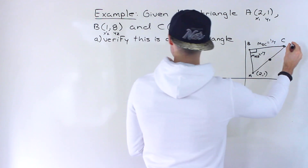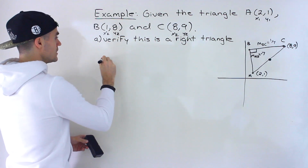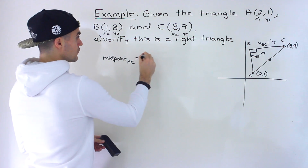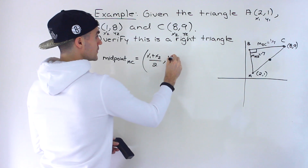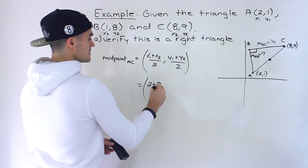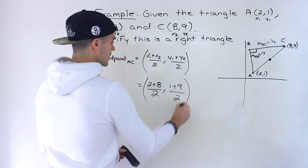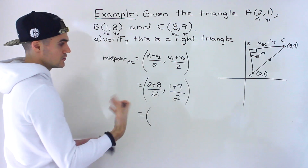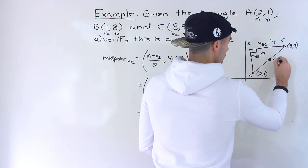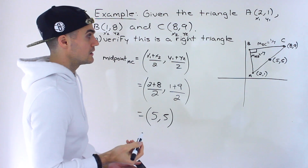For Part B, we need the midpoint of the hypotenuse AC. A is (2,1) and C is (8,9). Using the midpoint formula: ((x1+x2)/2, (y1+y2)/2) = ((2+8)/2, (1+9)/2) = (10/2, 10/2) = (5, 5). So the midpoint M of the hypotenuse is (5, 5).